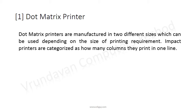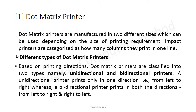Impact printers are categorized by how many columns they print in one line, and by print direction: unidirectional or bidirectional. A unidirectional printer prints in one direction only — from left to right — whereas a bidirectional printer prints in both directions, from left to right and right to left.